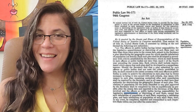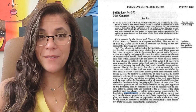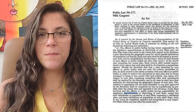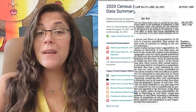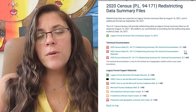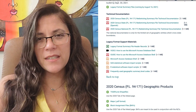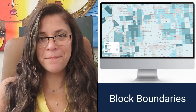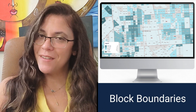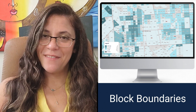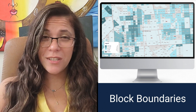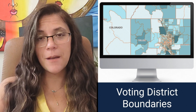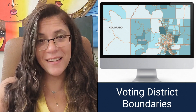What are PL 94-171 redistricting data files? Public Law 94-171 is a law that directs the Census Bureau to make special preparations to provide redistricting data needed by the 50 states. States are given the opportunity to identify small geographic areas for which specific data tabulations are needed.